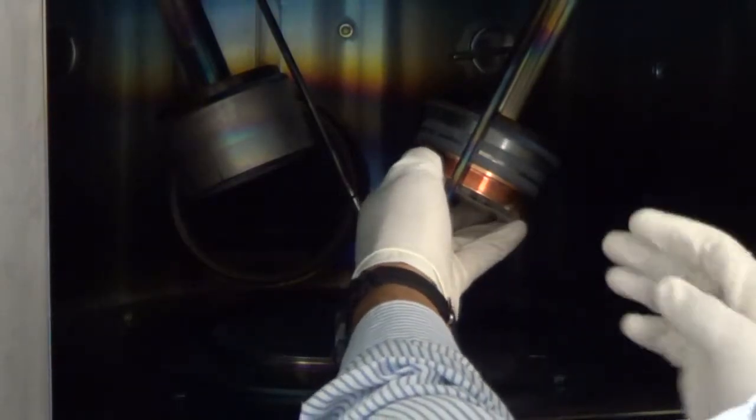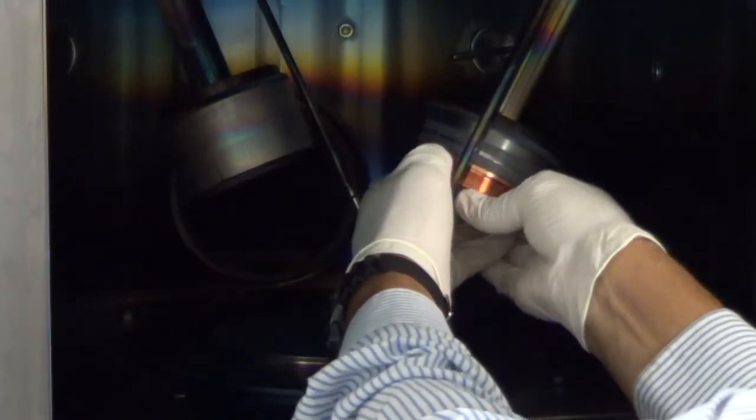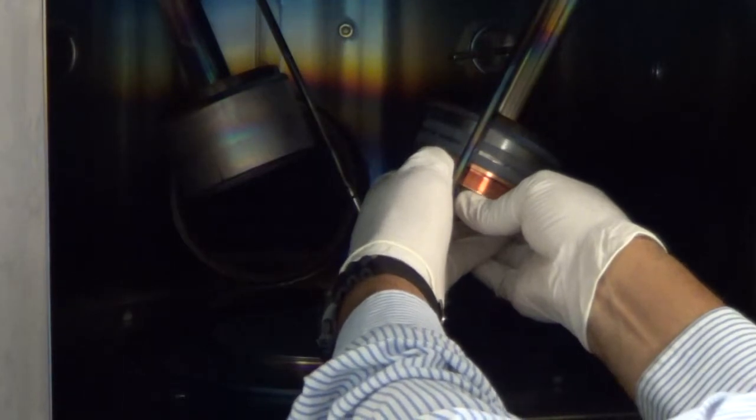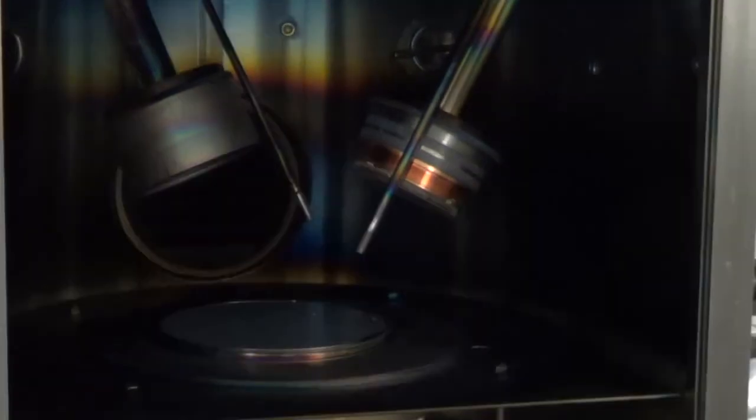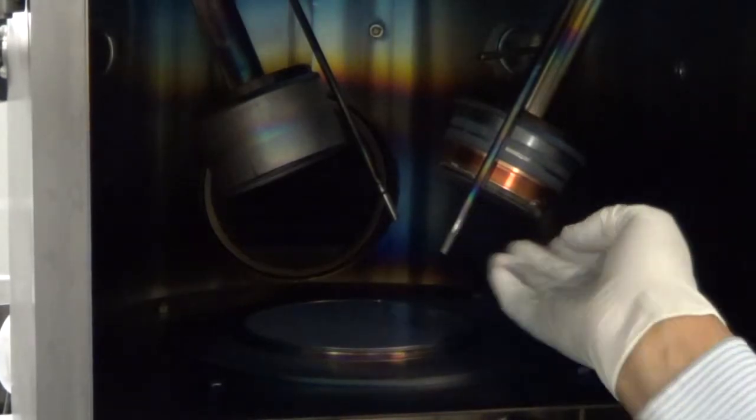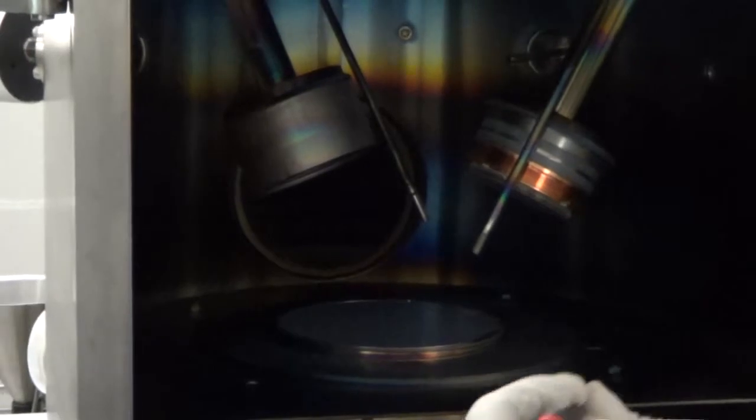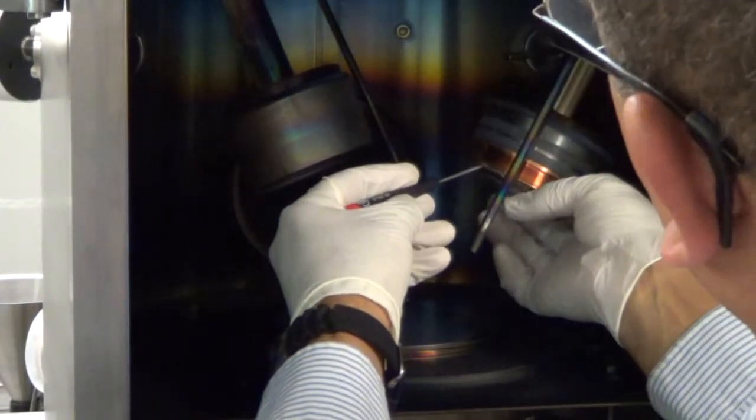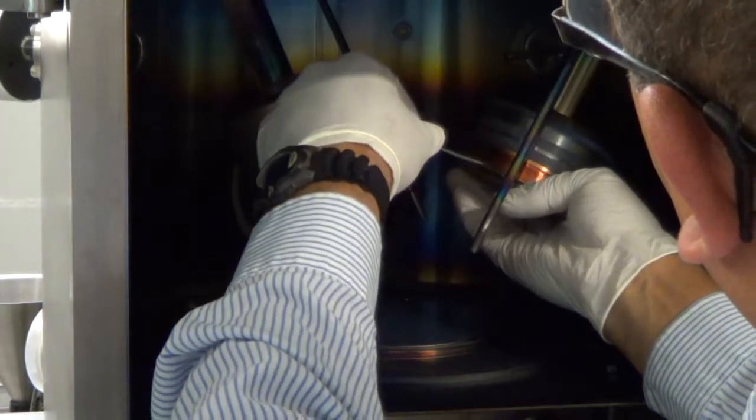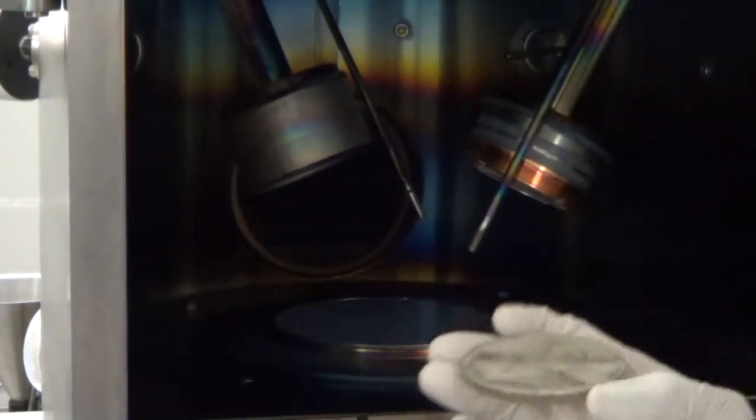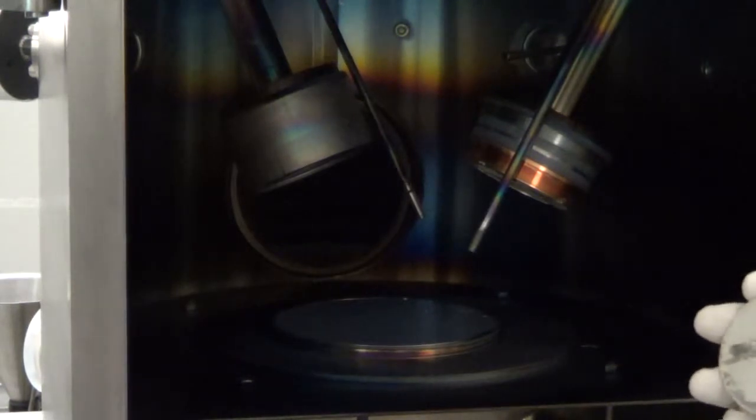Next, what you do is you just remove the target material. Sometimes a small screwdriver is required because the target is adhered to the cathode with soldering paste. It's sticky. The screwdriver is gently inserted. The target is easily removed. You can see this is an example of the indium paste.